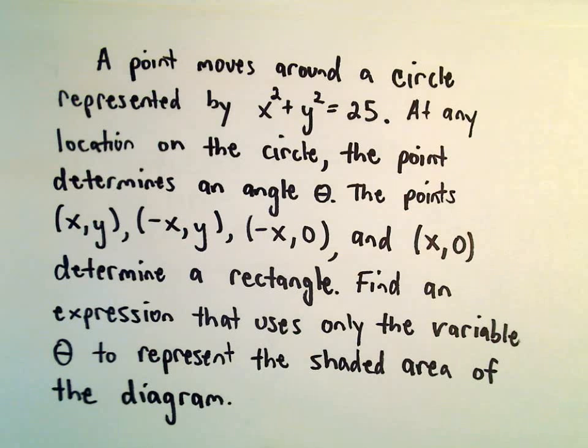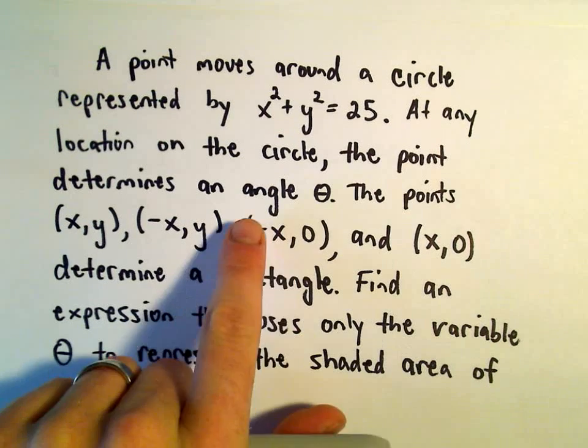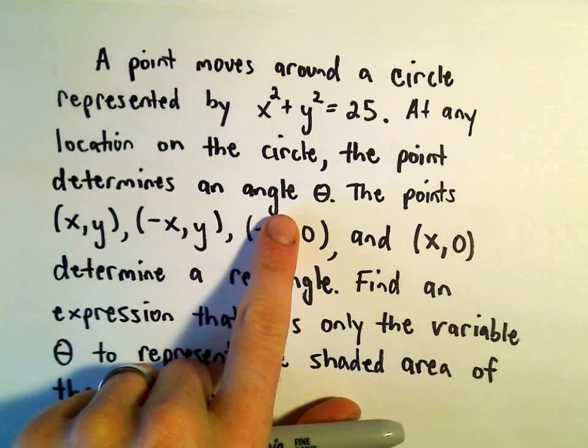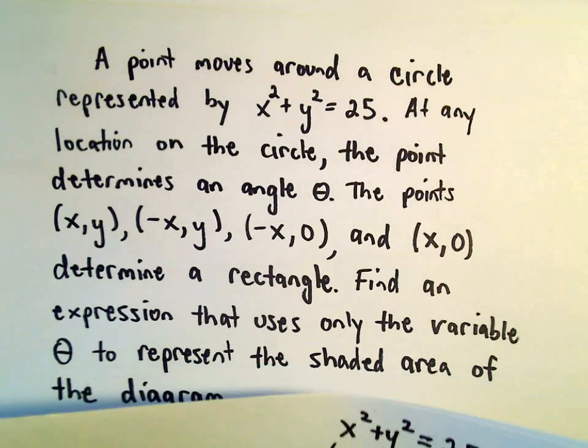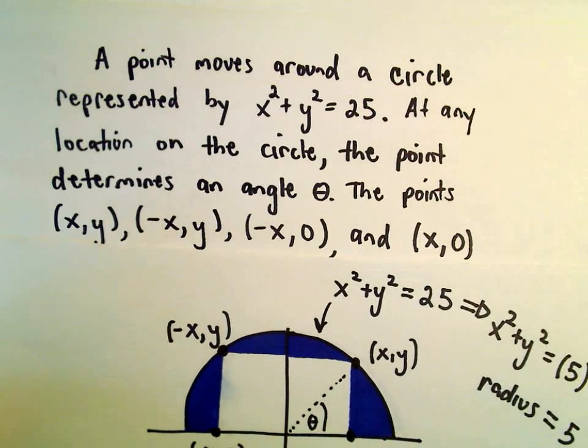At any point on the circle, our point (x,y) is going to determine an angle theta. And the points (x,y), (-x,y), (-x,0), and (x,0) are going to give a rectangle.